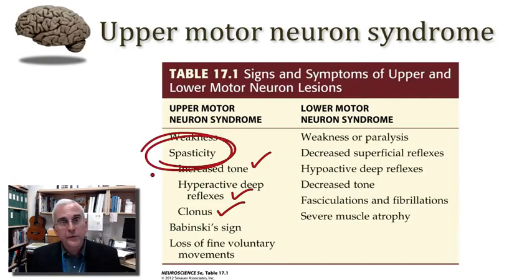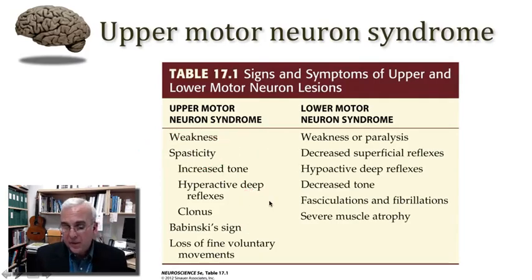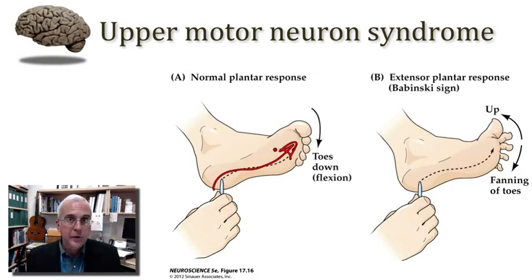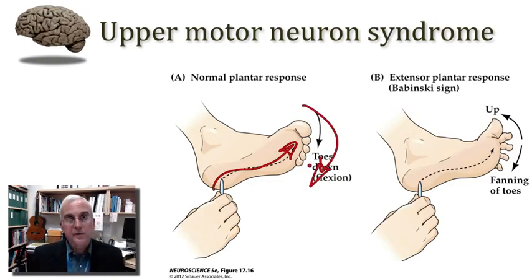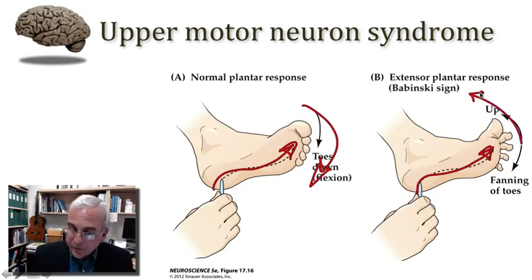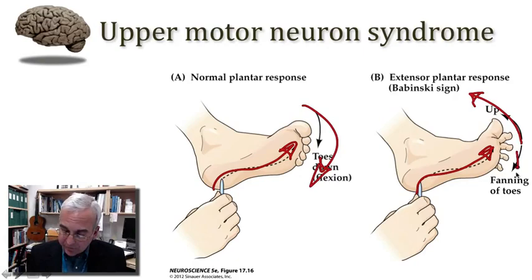One might also see some special signs associated with damage to upper motor neurons. One such sign is called Babinski sign. The Babinski sign is evident with the stroke of the sole of the foot with a sharp object. For adults with an intact corticospinal system, such a stroke from the heel of the foot towards the ball of the foot leads to flexion of the toes, or a downward turning of the toes — a normal plantar flexion response. Someone with damage to upper motor neurons might have a very different sign: with this heel to ball of foot stroking, we would see an upward turn of the great toe and a fanning out or extension of the remaining toes.